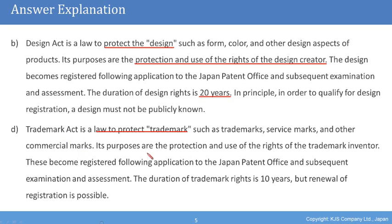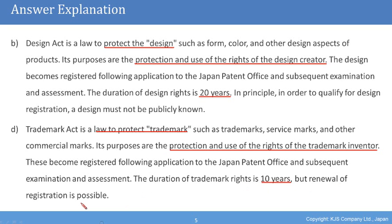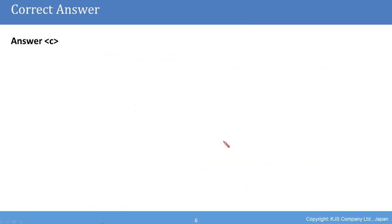Trademark rights protect the rights of the trademark owner. These become registered following application to the Japan Patent Office and subsequent examination and assessment. The duration of trademark rights is 10 years, but renewal of registration is possible. So the correct answer was option C, moral rights.